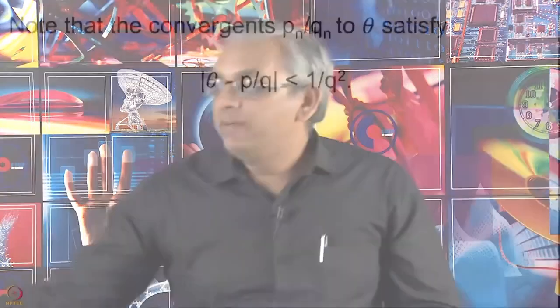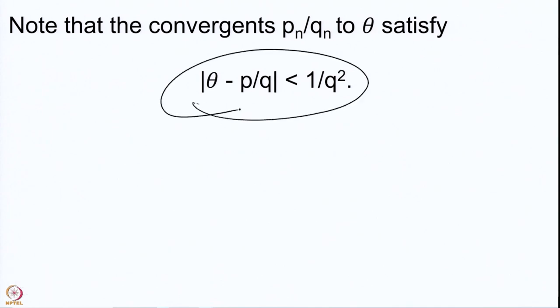Let us quickly go through the results that we have proved in the last lecture. What we have is that the convergents certainly satisfy the inequality that |θ - P/Q| < 1/Q². This is something that was anyway clear from the construction that we had for the continued fraction expansion for a given θ.